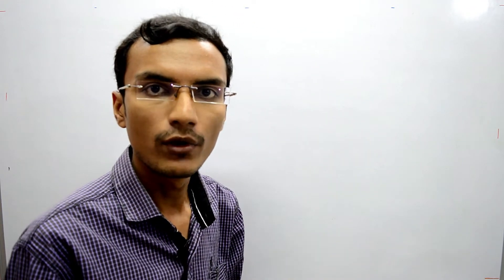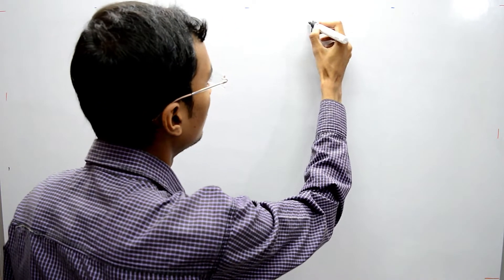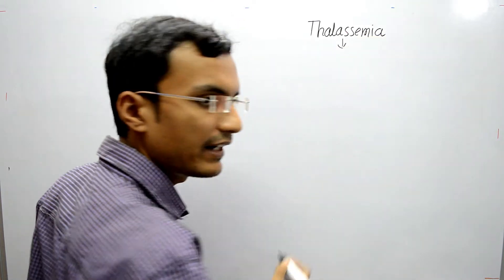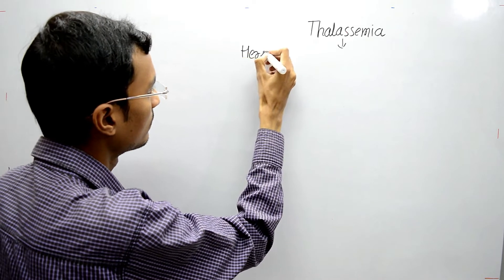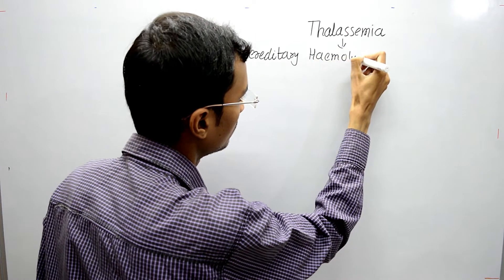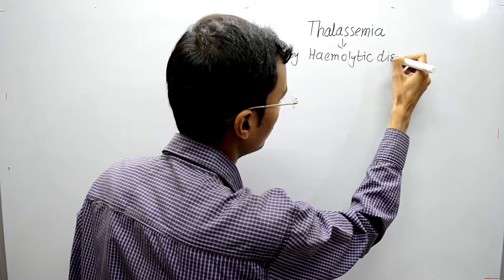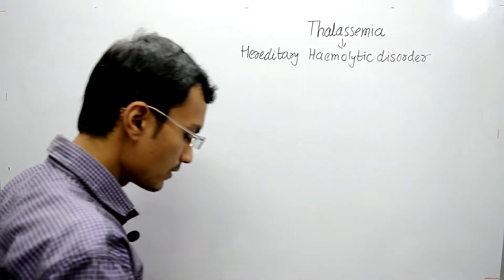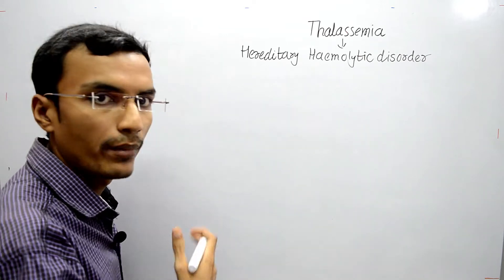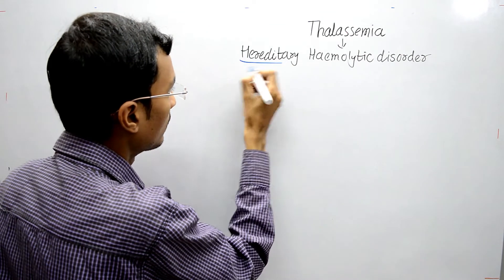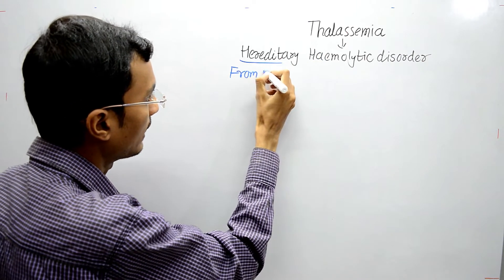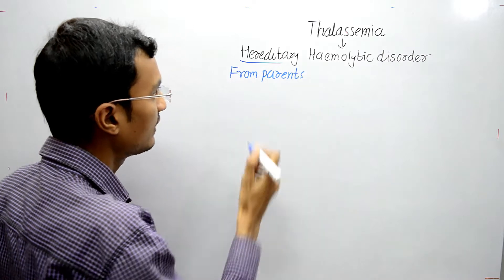Thalassemia is a Hereditary Hemolytic Disorder. Hereditary means we obtain this disorder from our parents — from parents to offspring. So offspring obtain or inherit this disorder from parents. That is a Hereditary Disorder.